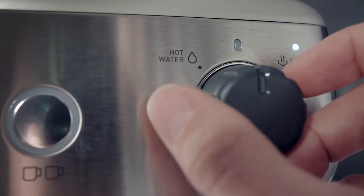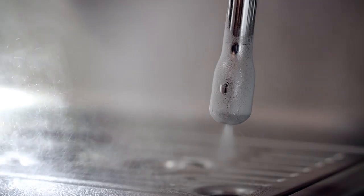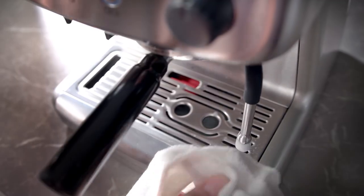Purge the steam wand by turning the dial to the hot water setting for 1 to 2 seconds. Wipe the wand and tip with a damp cloth.